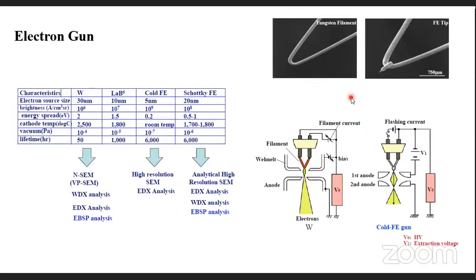The important point is what type of electron gun is used. For thermionic emission, we use a tungsten filament. For high-resolution images, the thermionic emission tungsten filament is not enough — you should go for a field emission filament, like a Schottky field emission filament. For FESEM, we go with a cold Schottky emission filament. The problem is the cost of this instrument is very high.